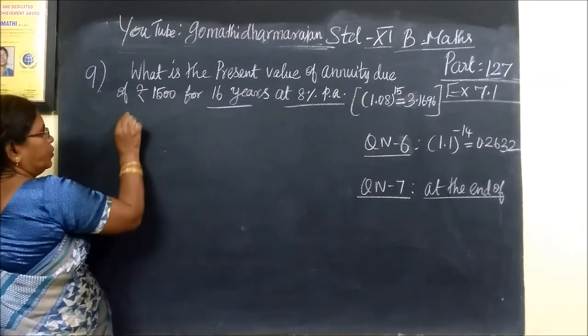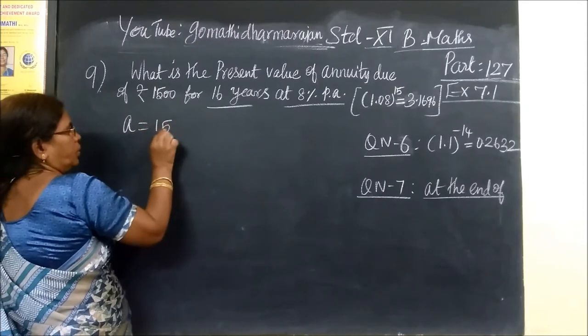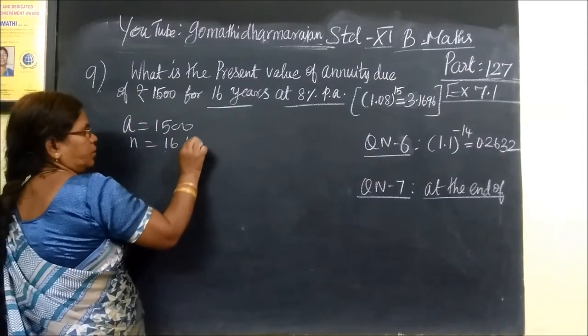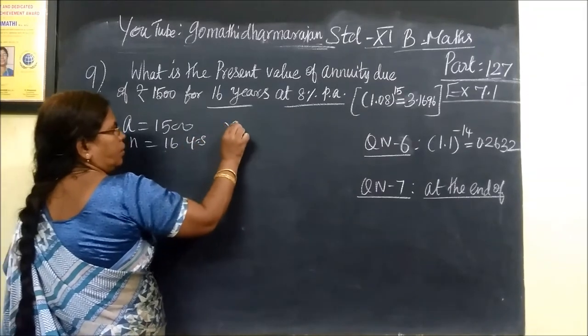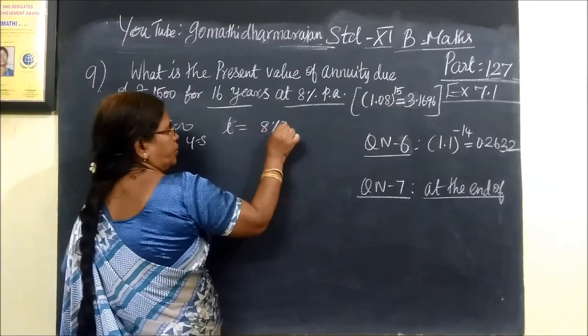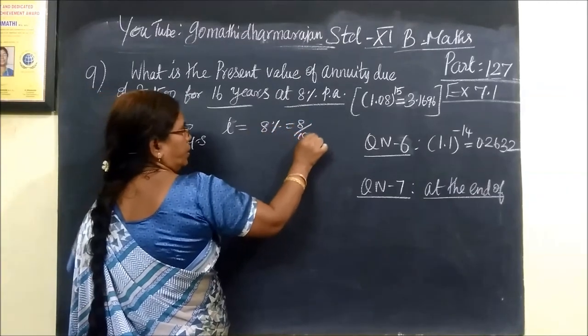A is equal to 1500, then N is equal to 15 years, then R, I equal to 8%, is equal to 0.08.